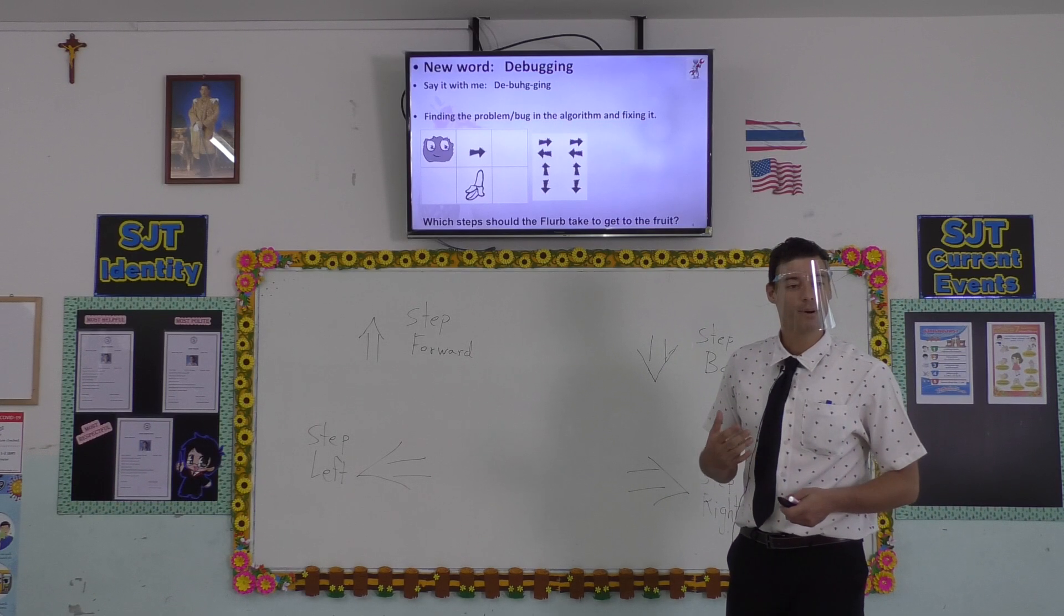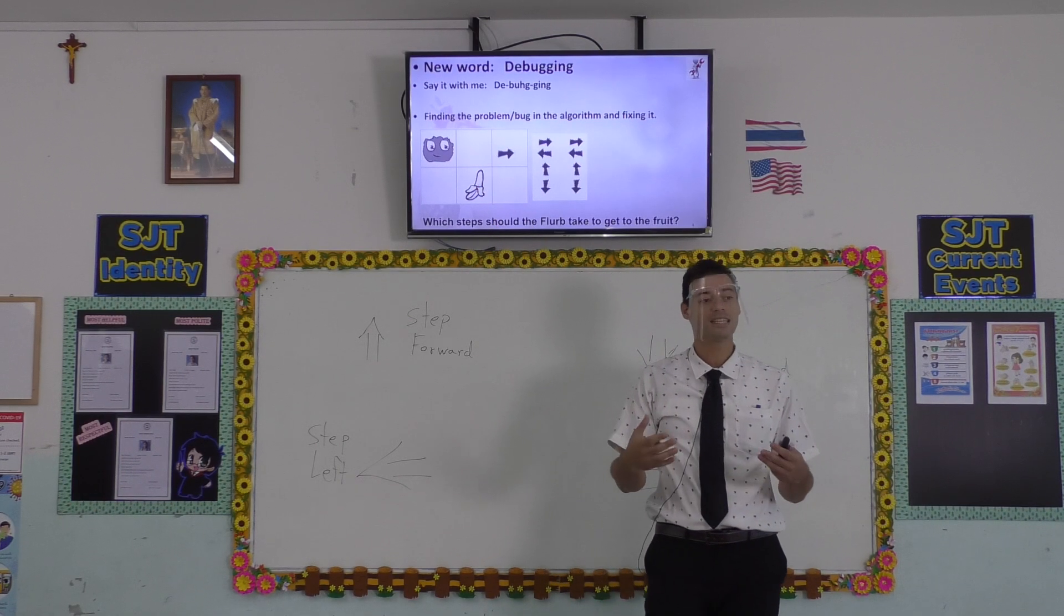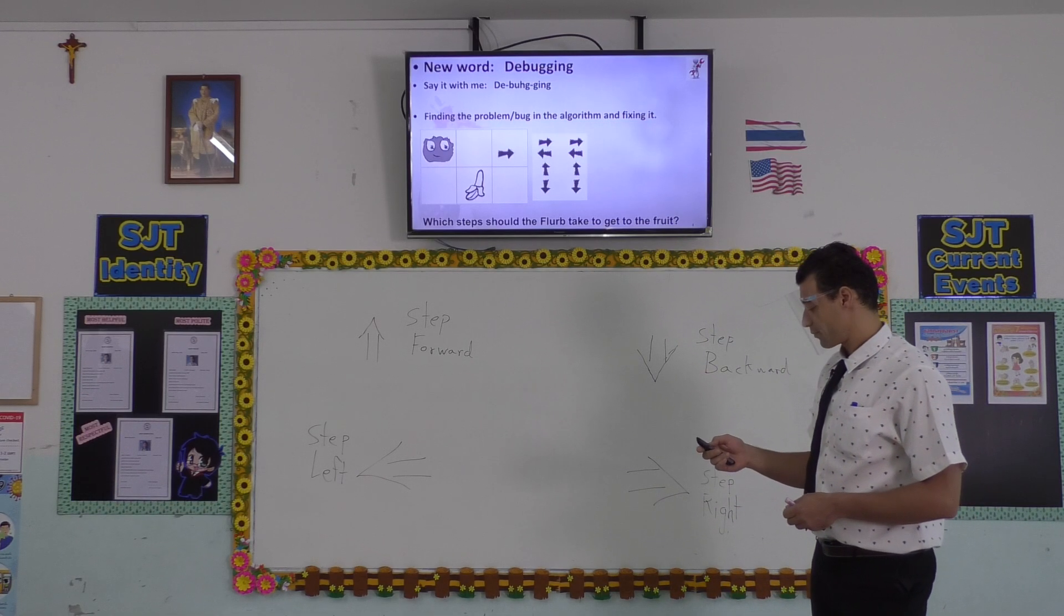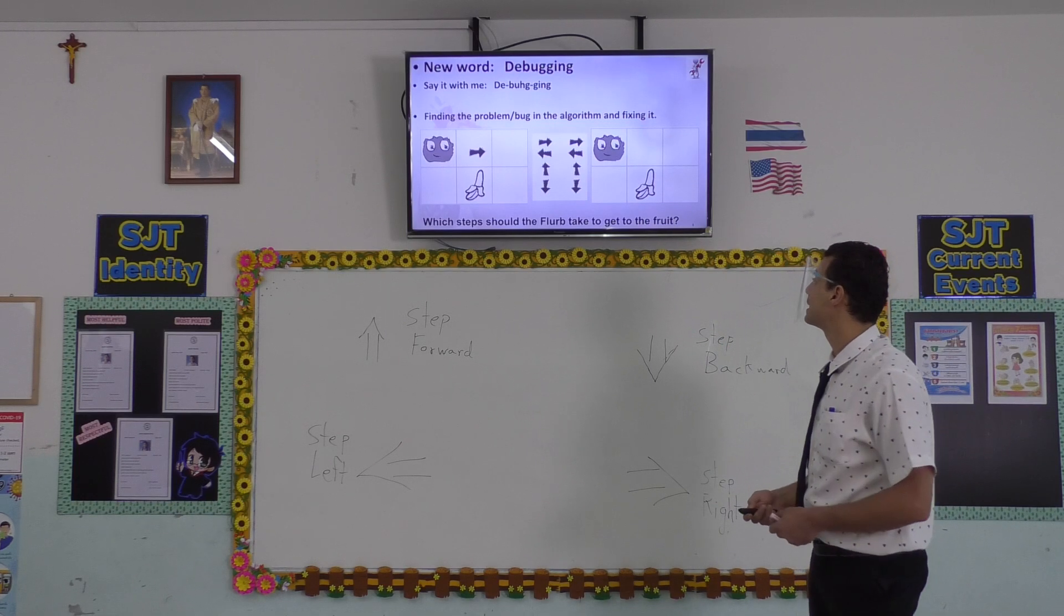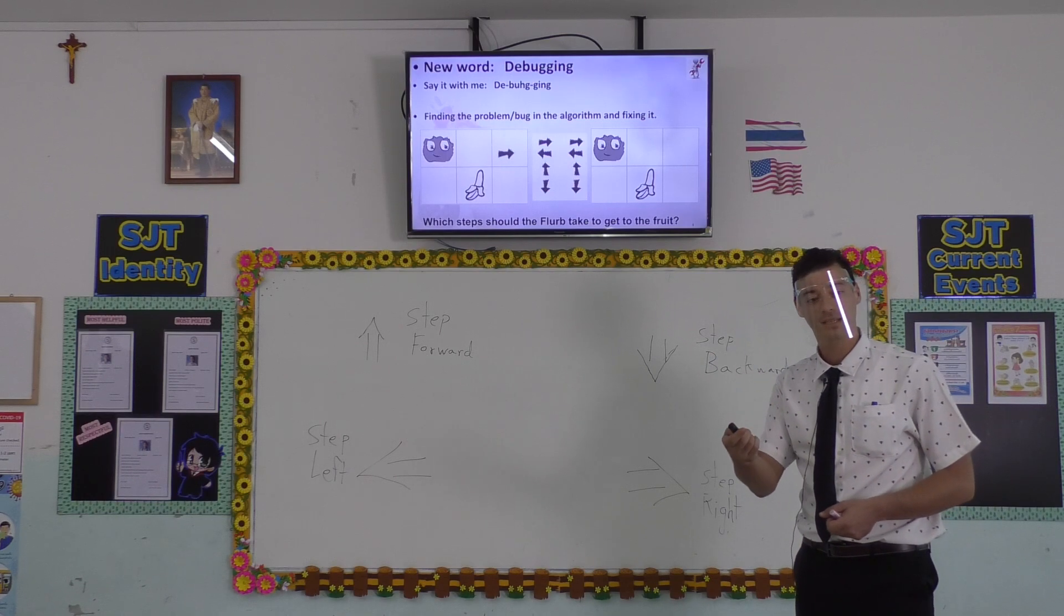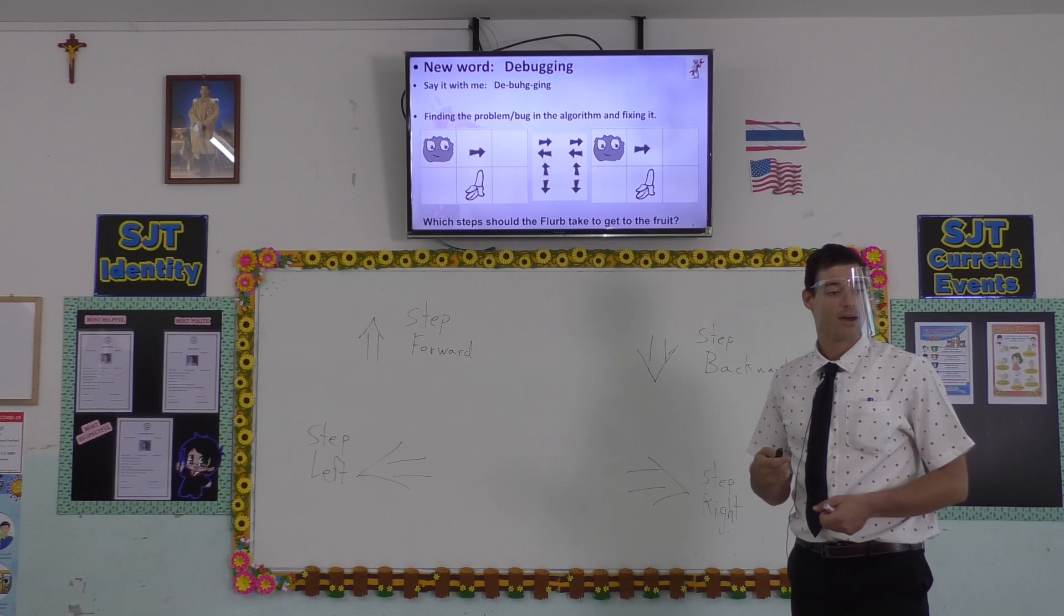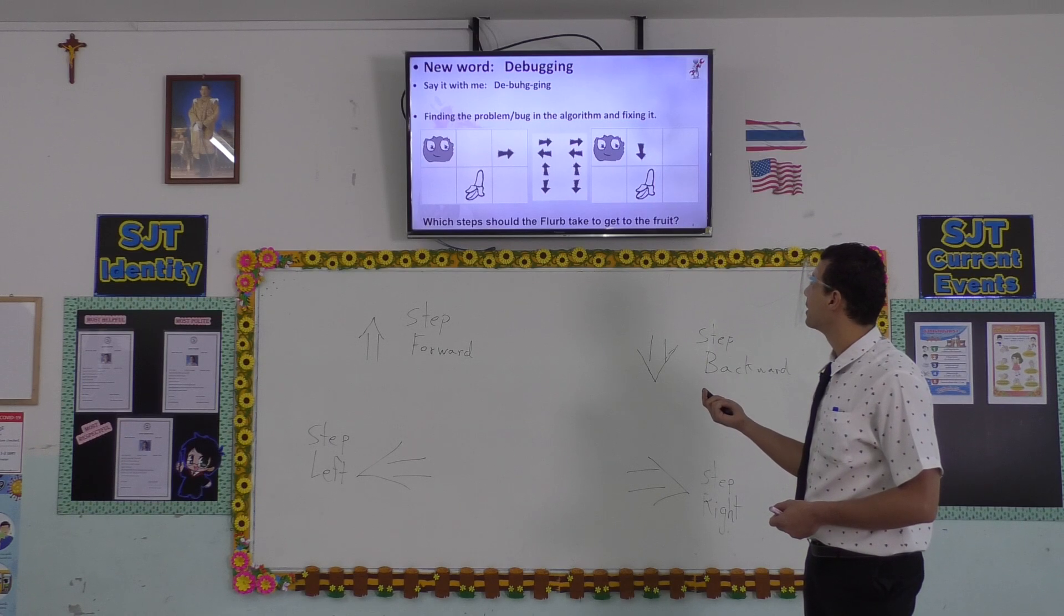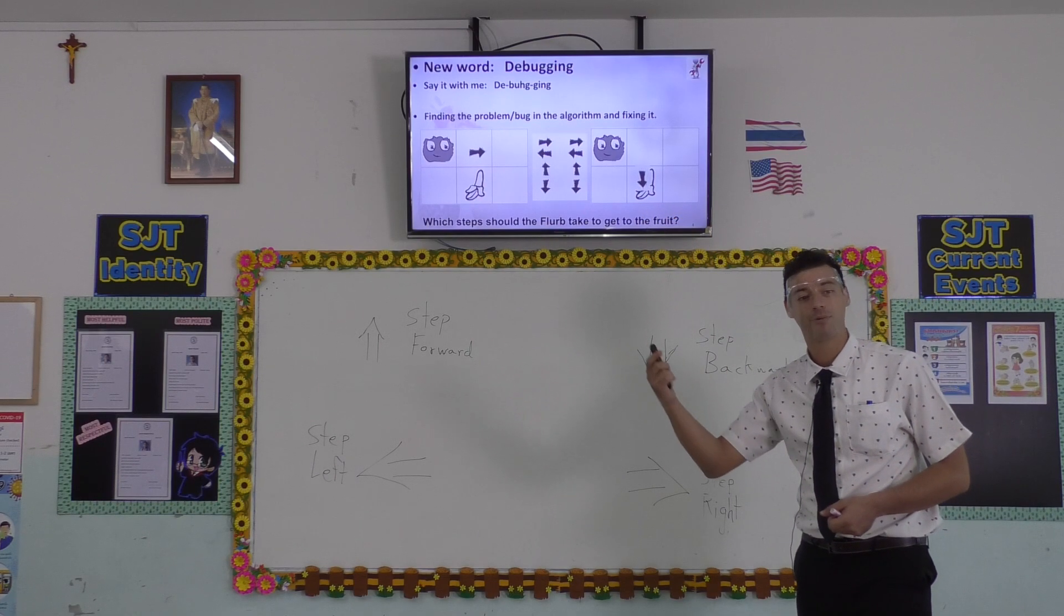So let's see where the bug is in this algorithm. Right about here. Flerb does not get to the fruit. So we found a problem. Now we have to fix it. So let's see what we can do. The first step was correct. Step right. What's next? Step backward. Very good. All right. So we found our problem and we fixed it.